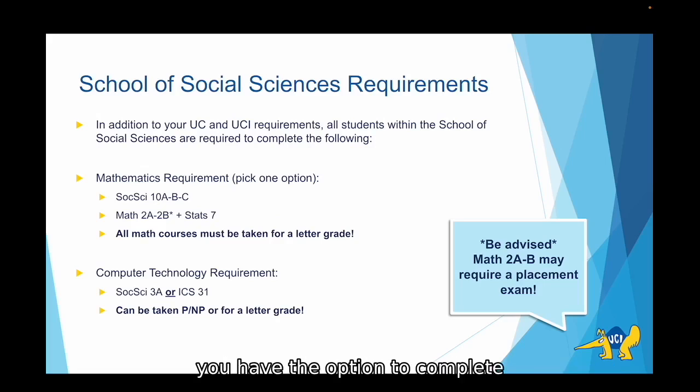As a political science major you have the option to complete either a statistic sequence or a calculus sequence with one quarter of stats. If you choose the statistic sequence you will take social science 10A, 10B, 10C. Keep in mind that the stat series is a year long so if you're planning to do this route you should really start it in the fall in order to finish it in the spring.